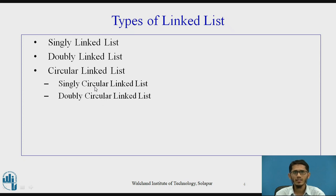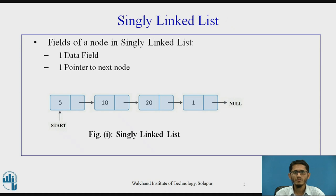The singly circular linked list is a singly linked list where the next pointer of the last node points to the first node. The doubly circular linked list is a doubly linked list where the next pointer of the last node points to the first node and the previous pointer of the first node points to the last node. In a singly linked list there is only one pointer to the next node, whereas in a doubly linked list there are two pointers — one to the next node and one to the previous node.